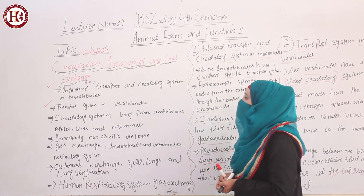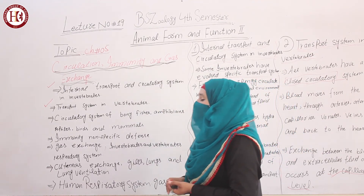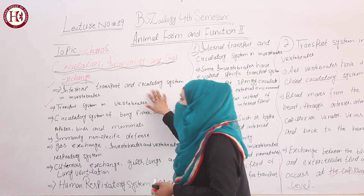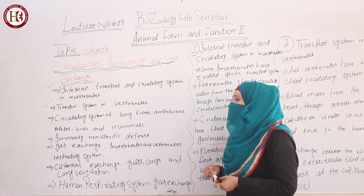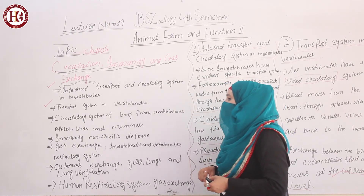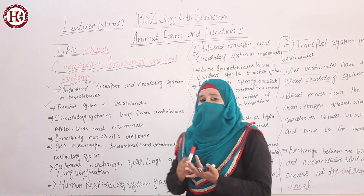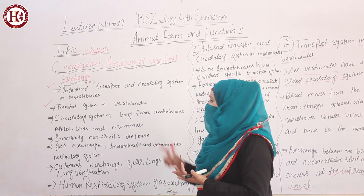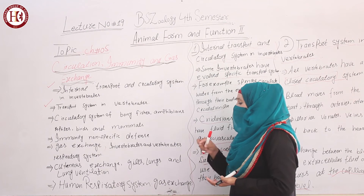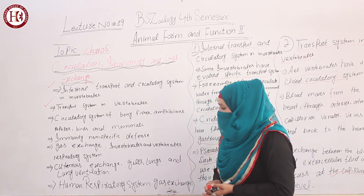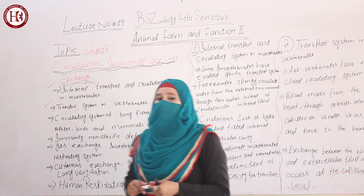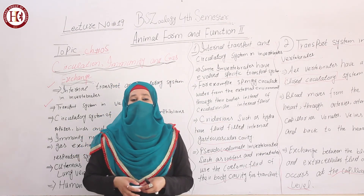To recap, our topic is Chapter 5: Circulation, Immunity and Gas Exchange. The main topics are: internal transport and circulatory system in invertebrates; transport system in vertebrates; circulatory system of bony fishes, amphibians, reptiles, birds and mammals; immunity and non-specific defense; gaseous exchange in vertebrates and invertebrates; respiratory system; cutaneous exchange; gills, lungs and lung ventilation; and human respiratory system and gas exchange.